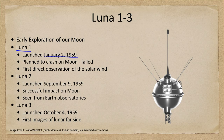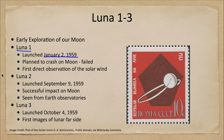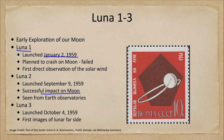Luna 2 was launched in September of 1959, and this was the first craft to actually impact on another celestial object. It actually impacted on the moon and crashed into its surface, and we were able to see that from Earth observatories — it was actually visible from Earth observatories.